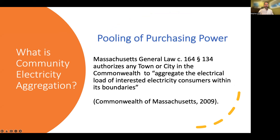So what is community electricity aggregation? A CEA program is a form of bulk purchasing of electricity. A municipality contracts with an electricity supplier on behalf of its residents, businesses, and sometimes the municipality itself. The purpose is to aggregate the purchasing power of small electricity rate payers to secure a better deal — either more favorable rates and/or greener electricity than consumers could procure on their own.